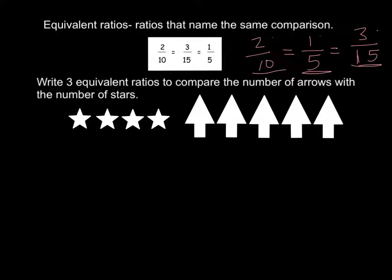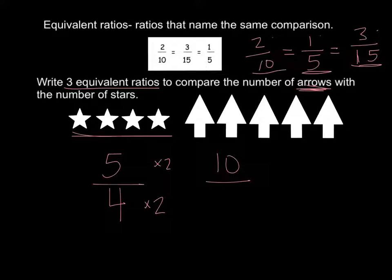So here it says write 3 equivalent ratios to compare the number of arrows with the number of stars. Now this is trying to trick us. Arrows is coming first but they showed us stars first. That's why we need to make sure we follow the directions. The number of arrows are 1, 2, 3, 4, 5 arrows to 4 stars. If I want to write three equivalent ratios I could multiply both by 2 and I could get 10-eighths. Or I could multiply them both by 3